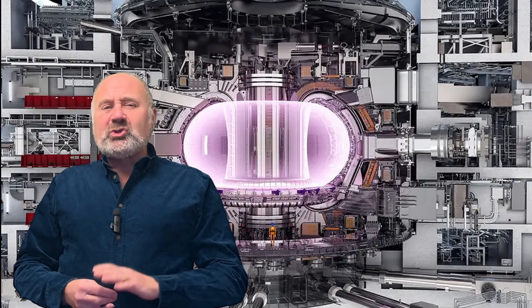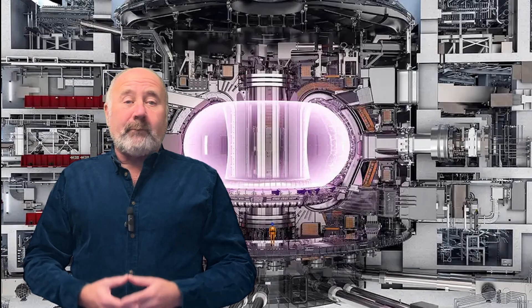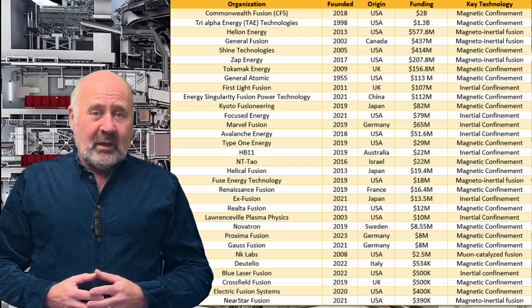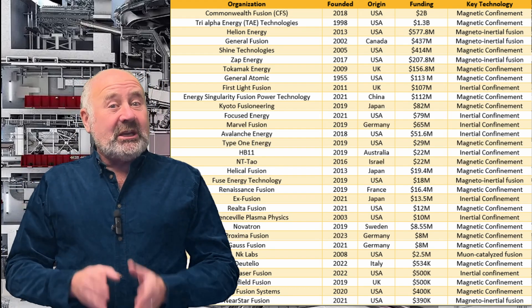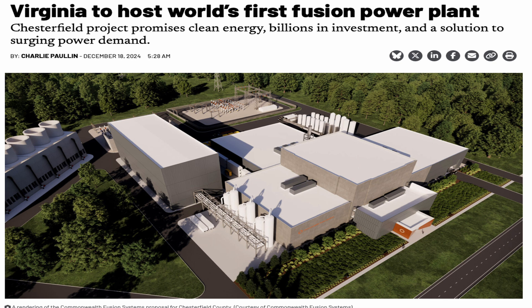But now, there are scores of companies working on developing commercially viable reactors. As of 2024, private investors have sunk $7.1 billion into companies working on fusion. These companies all talk about schedules in years, not decades. Helion has signed a power purchase agreement with Microsoft. Commonwealth Fusion Systems has an agreement with the Commonwealth of Virginia to build their first grid-connected power plant there. What I find most promising is that these companies are exploring many different concepts on how to crack this nut. One thing they all have in common is that they haven't demonstrated a working reactor or even something close.